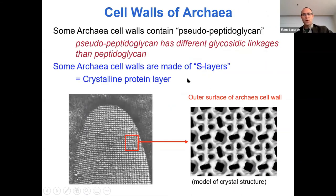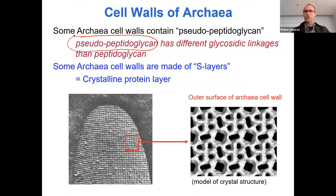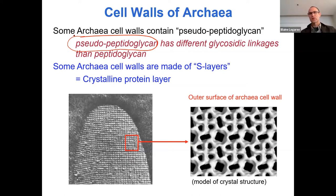That's it for bacterial cell walls. A few other cell walls to mention: the archaea are a separate domain and do not have peptidoglycan. Some have pseudopeptidoglycan — it looks similar but the linkages are actually different, so it's considered a separate chemical structure. Other archaeal cells may have S layers, where S stands for surface — these are actually crystalline proteins, as shown in an electron micrograph.